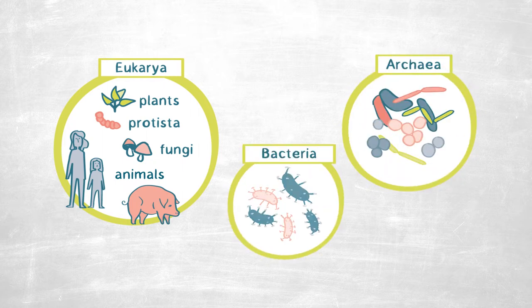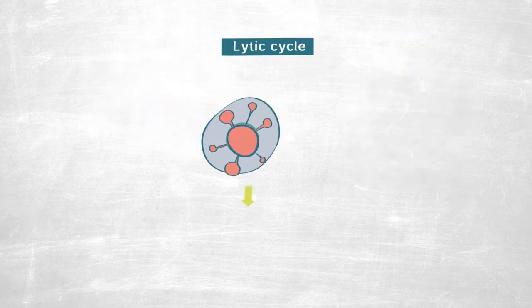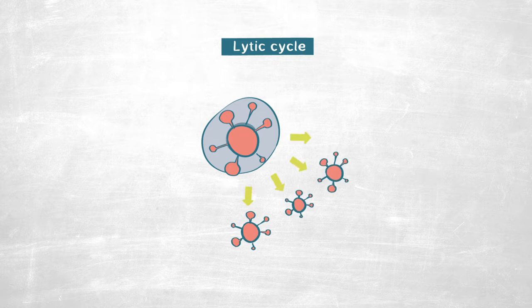Traditionally, viruses have always been seen as a killing machine which infects the host, reproduces itself, and then lyses the host in the process, which is known as a lytic cycle.